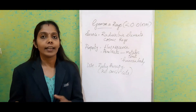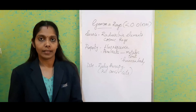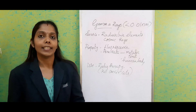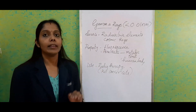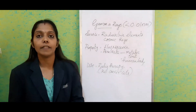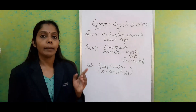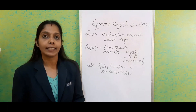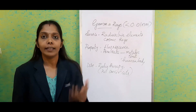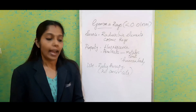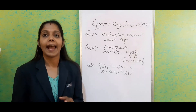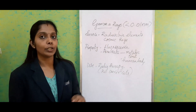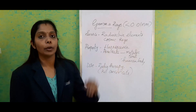We are going to study in the range of increasing wavelength, starting with the first ray which has the least wavelength — that is gamma rays. Gamma rays come under the wavelength range of less than 0.01 nanometer. We can also represent this in angstroms. Nanometer means 10⁻⁹ and angstrom means 10⁻¹⁰. So gamma rays fall under the range of less than 0.01 nanometer.